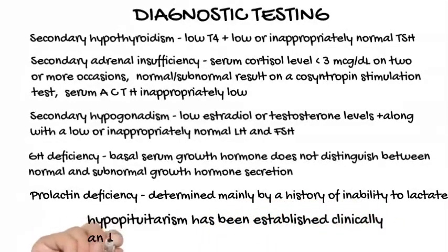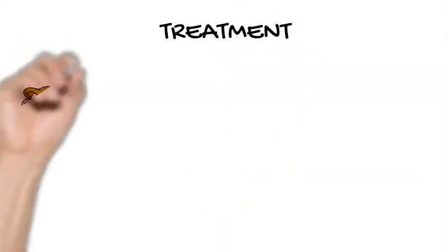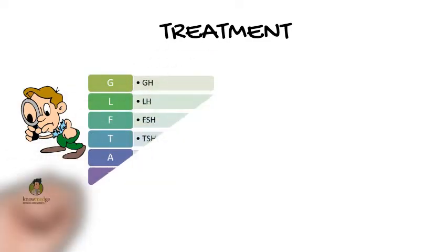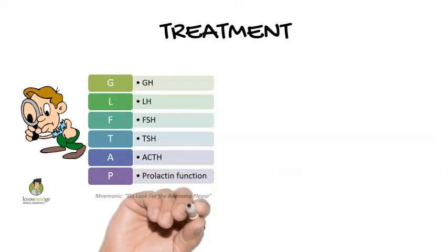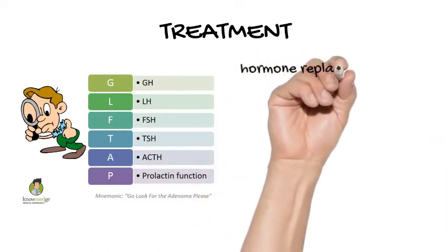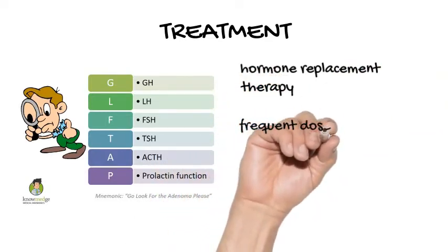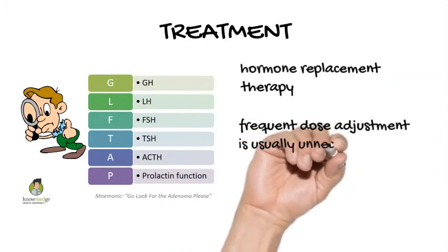When hypopituitarism has been established clinically and biochemically, magnetic resonance imaging of the pituitary is usually needed to identify the specific lesion. Treatment. Treatment of hypopituitarism consists of hormone replacement therapy. Efficacy of treatment should be evaluated clinically and biochemically. When the proper dose of replacement hormone has been identified, frequent adjustment is usually unnecessary, except in the case of glucocorticoid therapy during illness, when doses are increased.